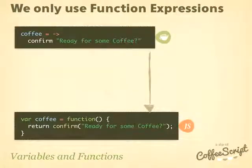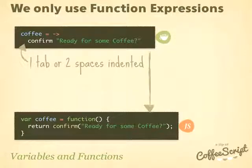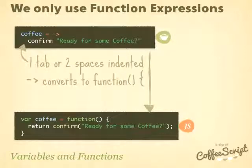A couple of things to notice about this code. First, instead of using curly brackets, we are just indenting — either two spaces or a tab, but you need to be consistent. The next thing to notice is that the little arrow converts to the function parentheses and curly braces, as you can see in the JavaScript.